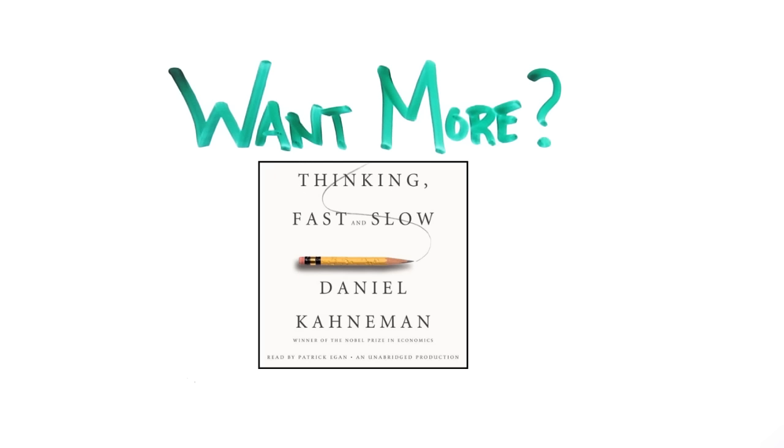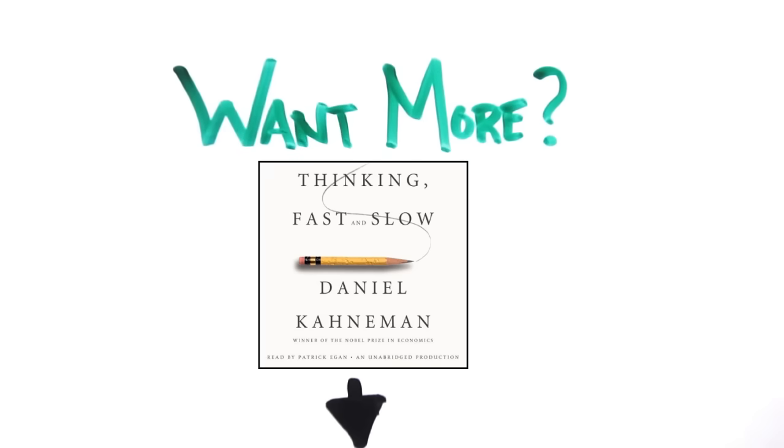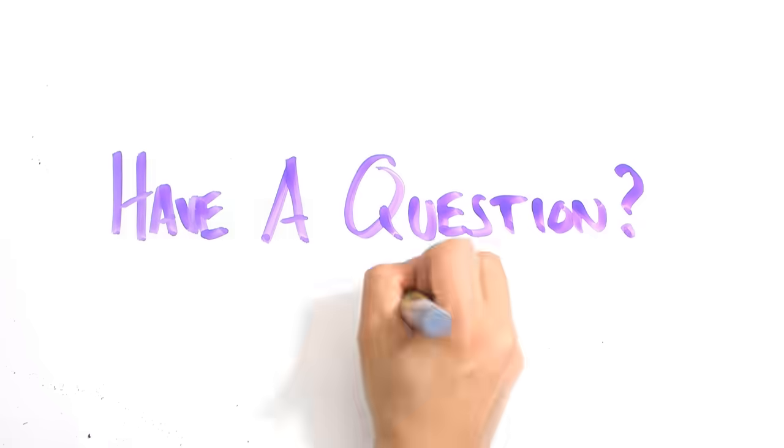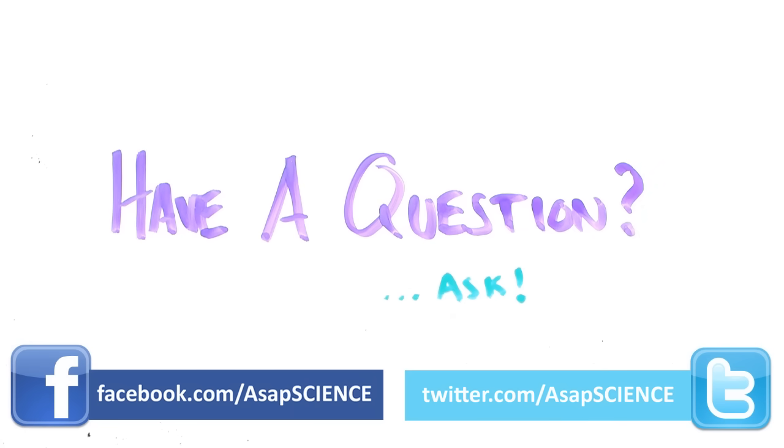If you'd like to learn more about the thinking systems in your brain, check out the book Thinking Fast and Slow by Daniel Kahneman, which covers it in great detail. I'll put a link in the description which you can check out. Got a burning question you want answered? Ask it in the comments or on Facebook and Twitter, and subscribe for more weekly science videos.